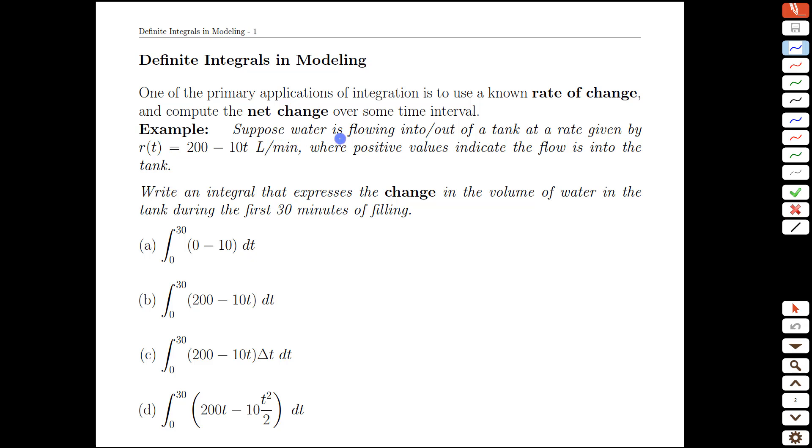Let's take a look at an example. You've got water flowing into or out of a tank at a rate given by 200 minus 10T liters per minute. So that's a rate of change of volume. We add the codicil that positive values indicate the flow is into the tank. So negative values would be flow out of the tank.